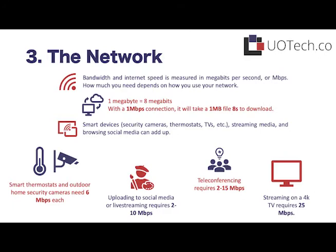I put a couple of examples here on the slide. Streaming on a 4K TV requires 25 megabits per second. Teleconferencing can require anywhere between 2 to 15 megabits per second. Uploading to social media, live streaming, and browsing social media can take anywhere between 2 to 10 megabits per second. And things like your smart thermostats or home security cameras take 6 megabits per second each.